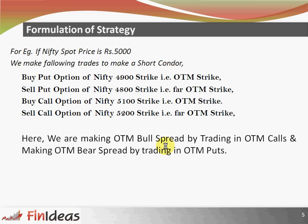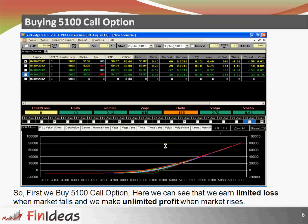Now we analyze all four trades individually. First, we buy the 5100 call option. Here we can see that we have unlimited loss when market falls and when market rises we have unlimited profit. In the chart, when there is an upward movement above 5100 we are having unlimited profit, and when market is falling below 5100 we are having limited loss up to the premium.